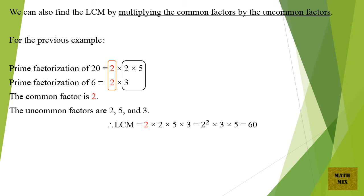We can also find the LCM by multiplying the common factors by the uncommon factors. For the previous example: prime factorization of 20 = 2 × 2 × 5, and prime factorization of 6 = 2 × 3. The common factor is 2; the uncommon factors are 2, 5, and 3. Therefore, LCM = 2 × 2 × 5 × 3 = 2² × 3 × 5 = 60.